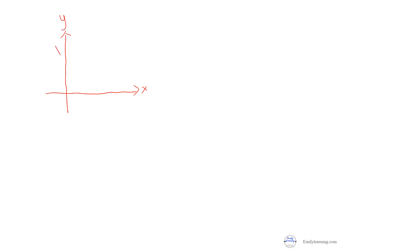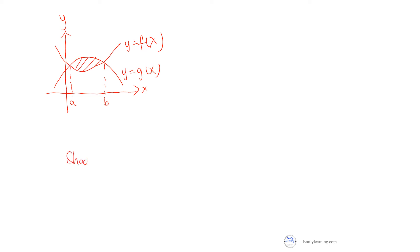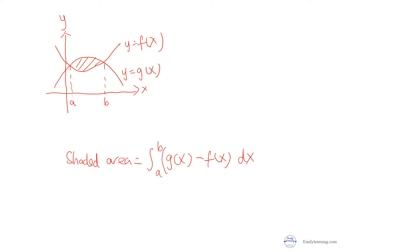To find the area between two curves y = f(x) and y = g(x), between x = a and x = b, the shaded area equals the integral from a to b of the higher curve minus the lower curve with respect to x. The higher curve is the one with the greater y-value — in this case g(x) — and you subtract the lower curve f(x), integrating g(x) − f(x) from a to b.